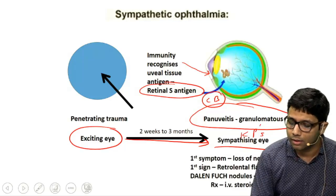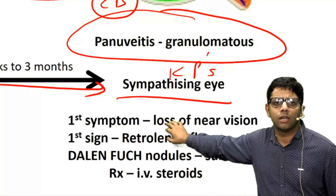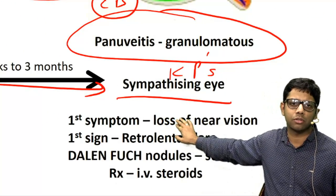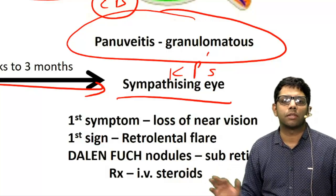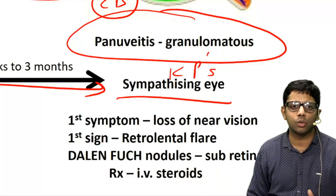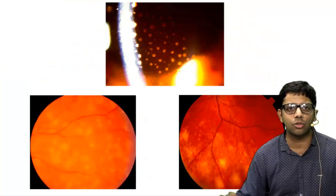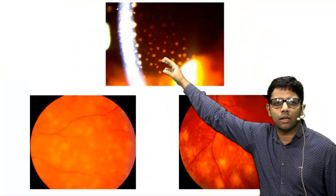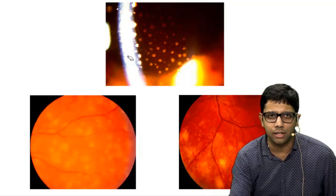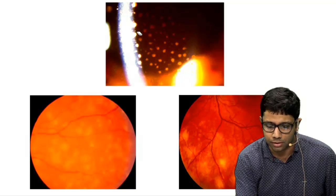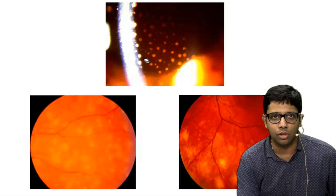The ciliary body is most commonly involved, which is why the first symptom in the other eye is loss of near vision or loss of accommodation. Aqueous flare can be the first sign; nodules can be present under the retina called Dalen-Fuchs nodules. Treatment is with intravenous steroids. On slit lamp examination at the corneal level, these are mutton-fat keratic precipitates seen in granulomatous uveitis.